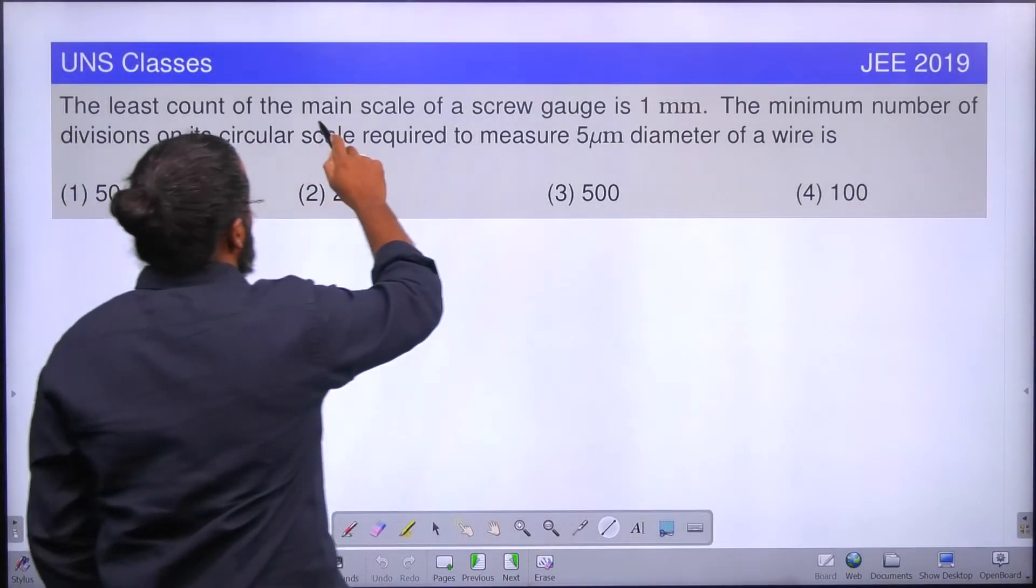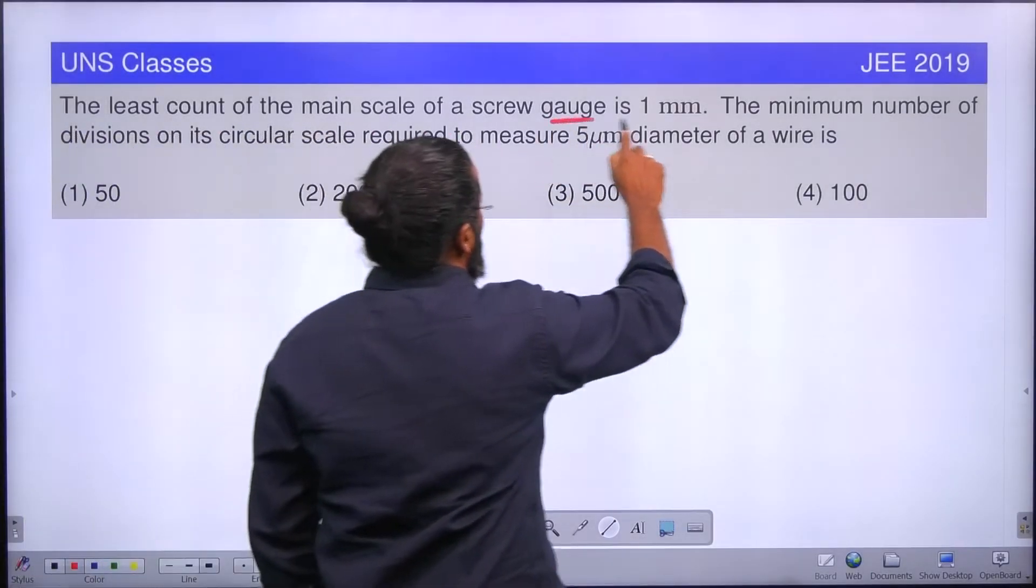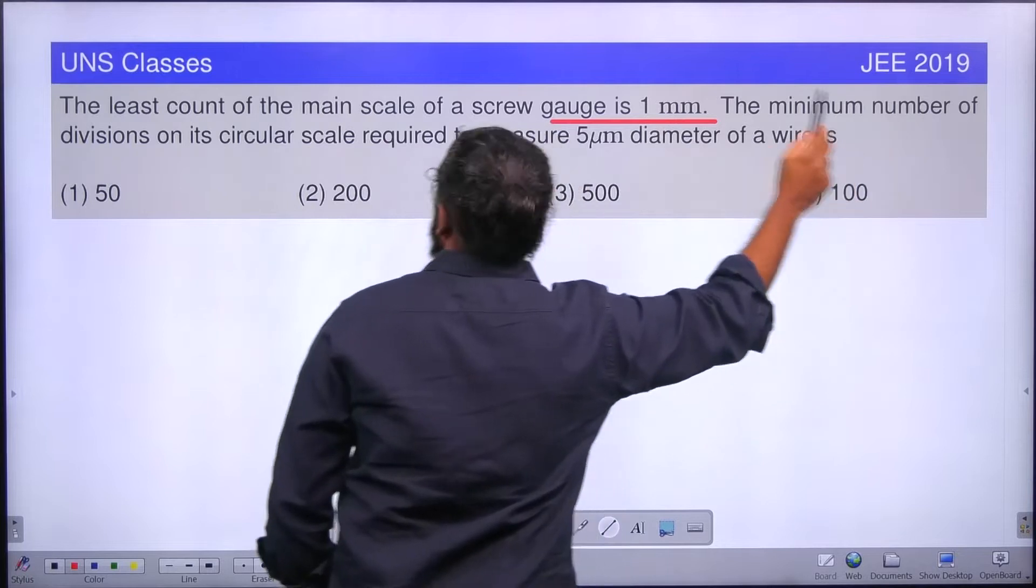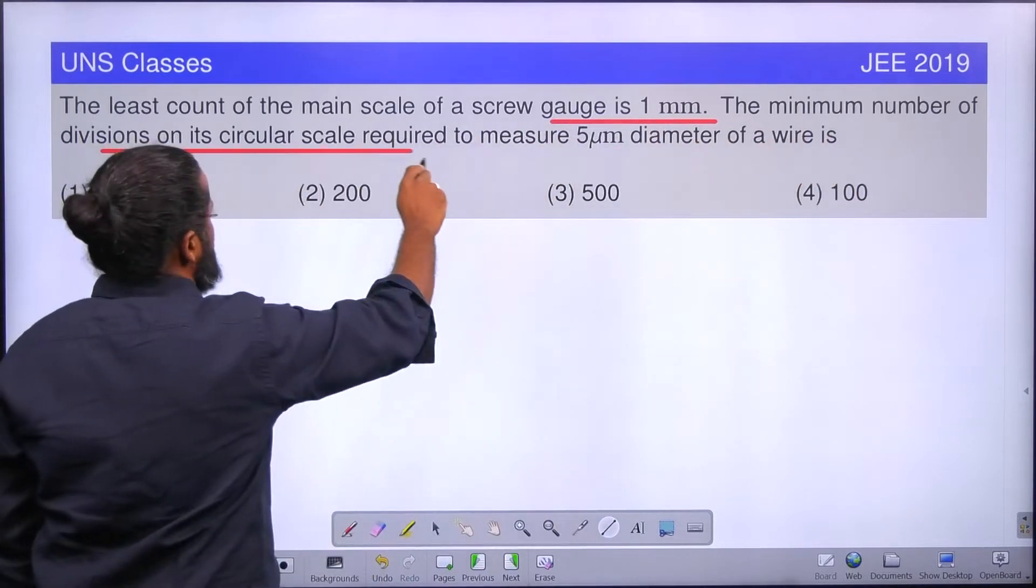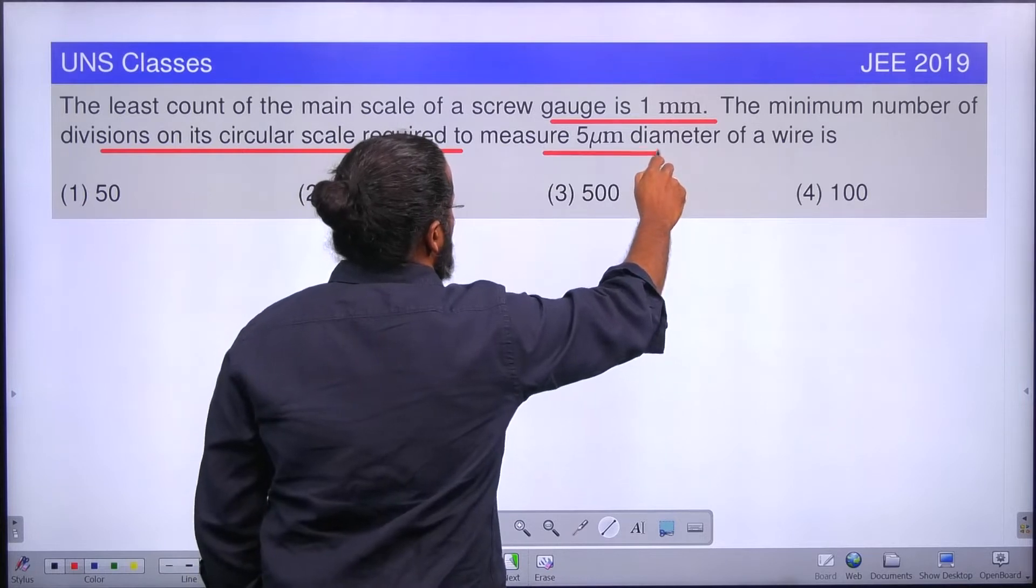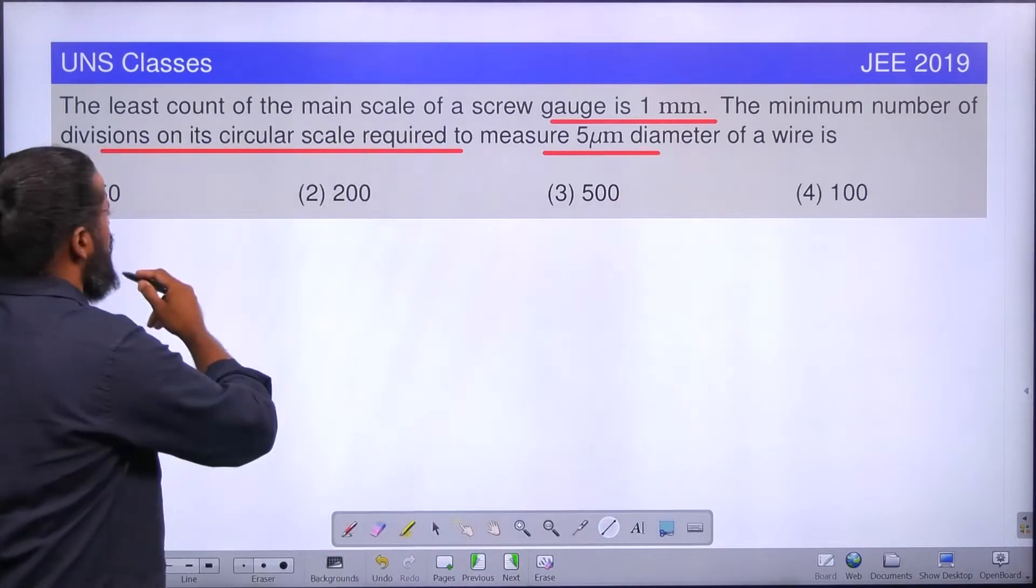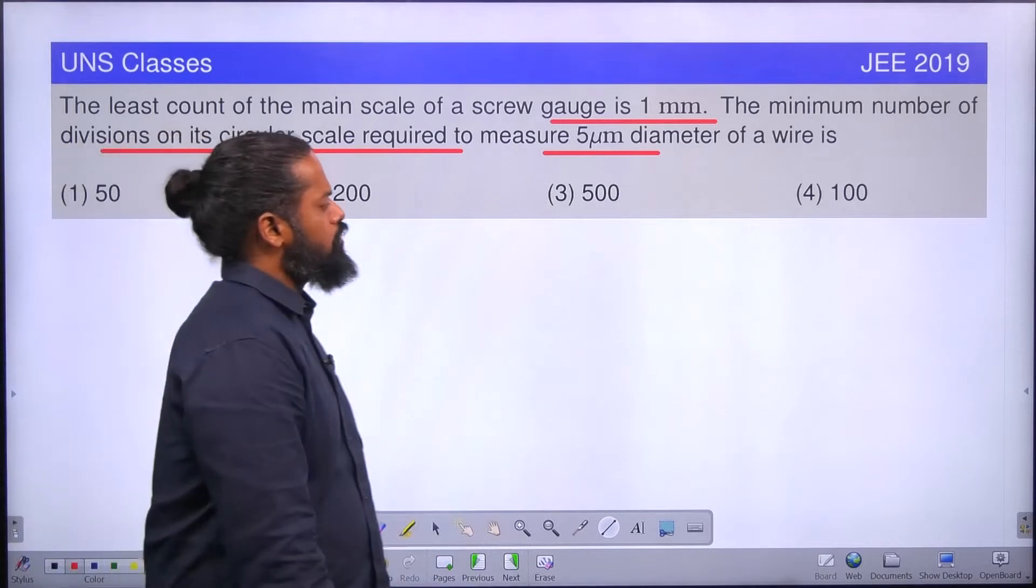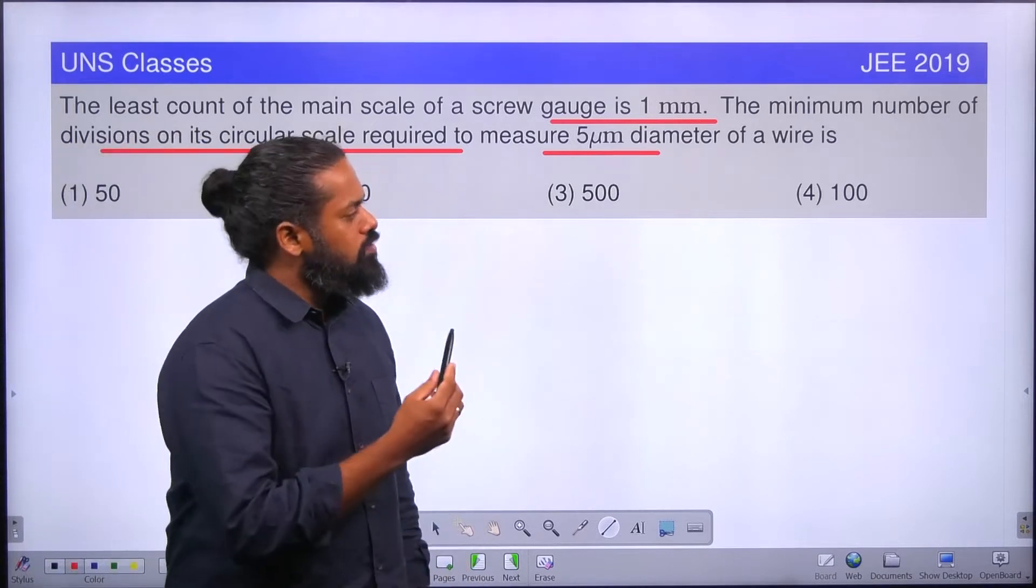The least count of the main scale of a screw gauge is 1 millimeter. The minimum number of divisions on its circular scale required to measure 5 micrometer diameter of a wire is. Options are given: 50, 200, 500, 100 divisions. This is a question from JEE 2019.